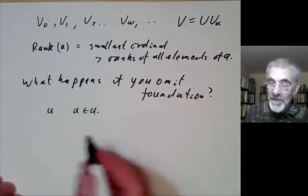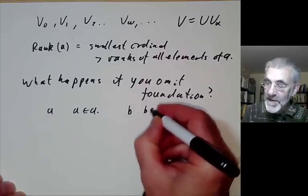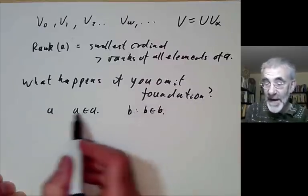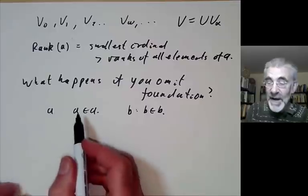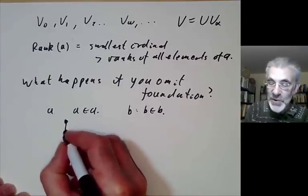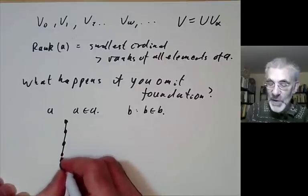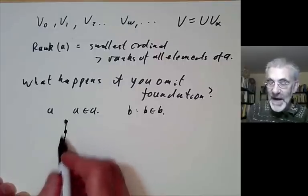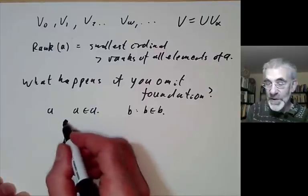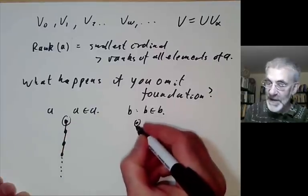This actually gives a philosophical problem. If you've got a set B such that B is the only member of B, and a set A such that A is the only member of A, let's draw pictures of them as trees. The set A when pictured as a rooted tree looks a certain way, and the set B looks exactly the same.